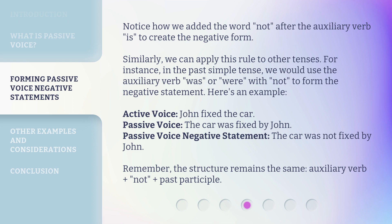We can apply this rule to other tenses. For instance, in the past simple tense, we would use the auxiliary verb 'was' or 'were' with 'not' to form the negative statement. Here's an example — Active voice: 'John fixed the car.' Passive voice: 'The car was fixed by John.' Passive voice negative statement: 'The car was not fixed by John.' Remember, the structure remains the same: auxiliary verb + not + past participle.